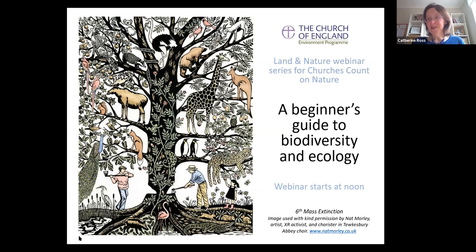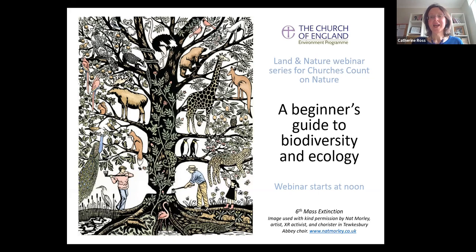Throughout this whole week we've been doing an incredible range of webinars on different aspects of land and nature, timed to coincide with Churches Count on Nature. There are over 500 churches around the country taking part this week, going out into their churchyards and green spaces and recording the plants, insects, and birds they find there. All of that information is going on to the National Biodiversity Network database, giving us lots more information about the ecology in our churchyards.